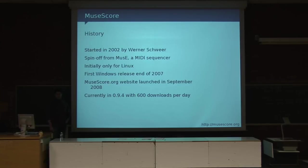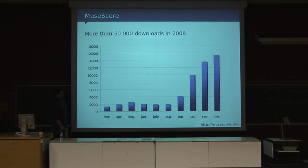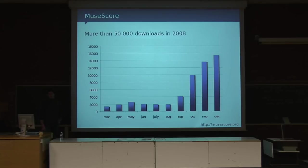Then in September 2008 we launched the MuseScore.org website, which was quite a milestone — we went from 50 downloads per day to 200 downloads per day. Lots of newcomers and new users came in, and people were filing bugs, which sped up the development cycle a lot. Just two days ago the final version 0.9.4 was released, and we are right now at 600 downloads per day. Normally in 2009 we should be going over 20,000 to perhaps 40,000 downloads per month.